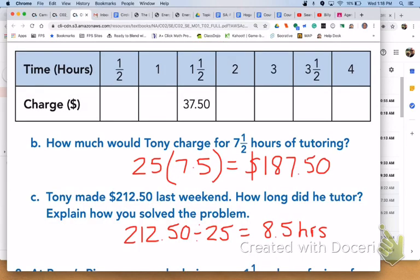For letter B, I'm going to multiply $25 by the 7.5 hours to get $187.50 for 7.5 hours of tutoring. And for letter C, $212.50 divided by 25 is going to give me the 8.5 hours that Tony tutored.